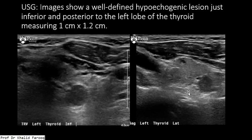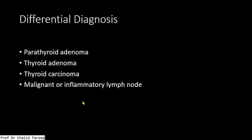On ultrasound we can see a well-defined hypoechoic solid lesion in the thyroid gland. This is a non-specific picture which will have a differential of thyroid nodule versus parathyroid adenoma.